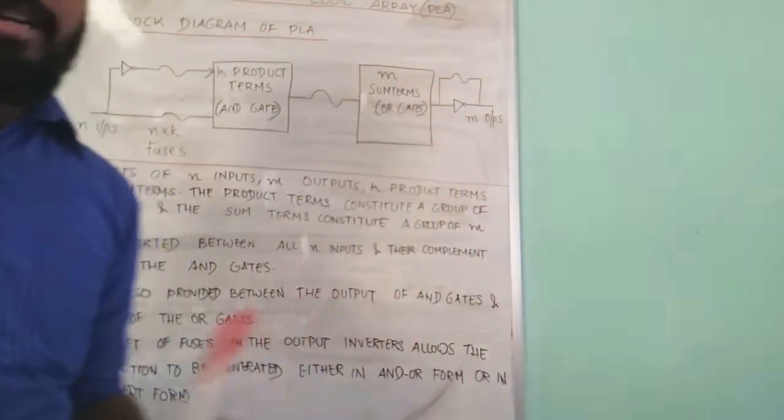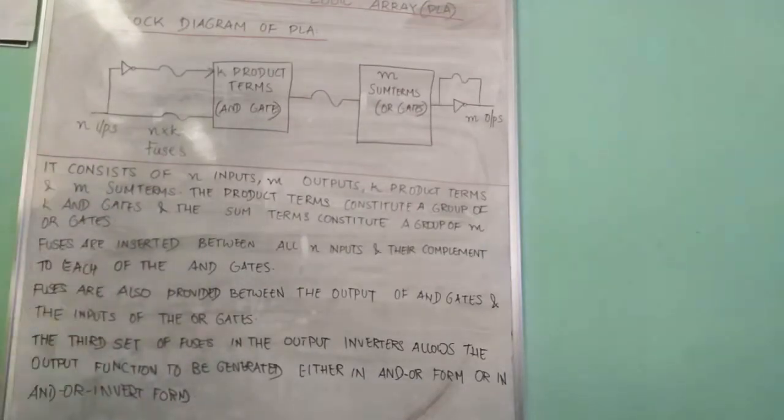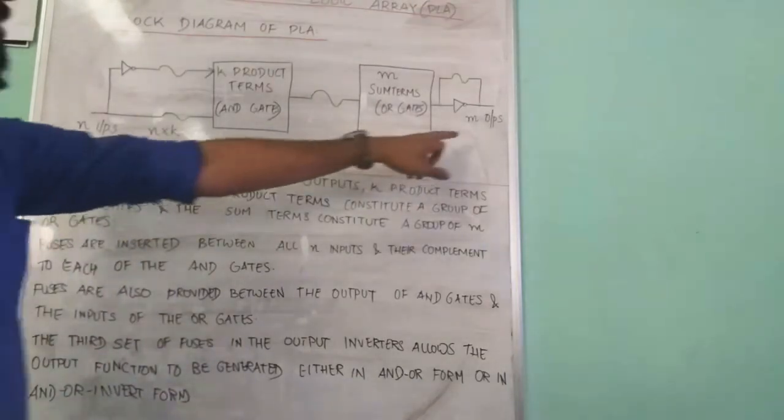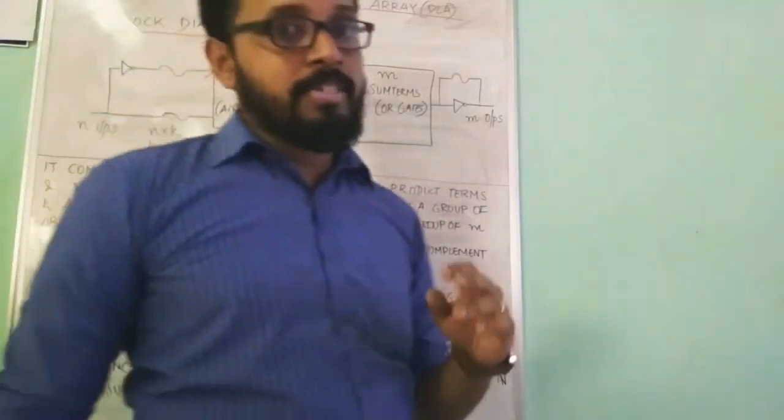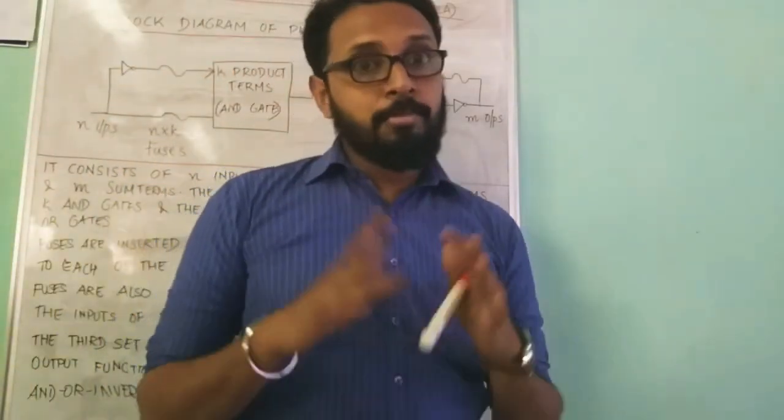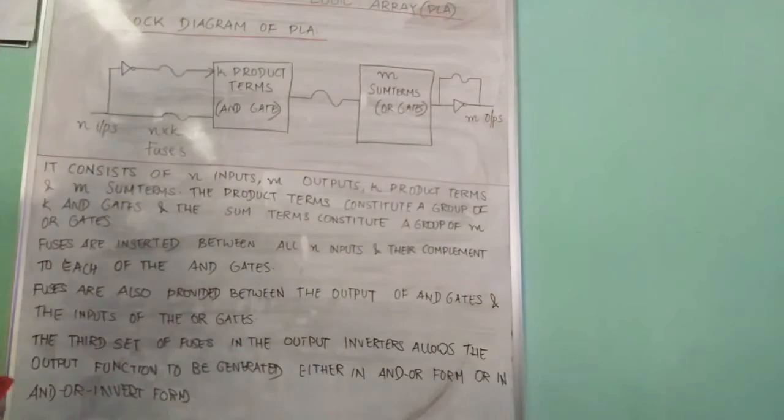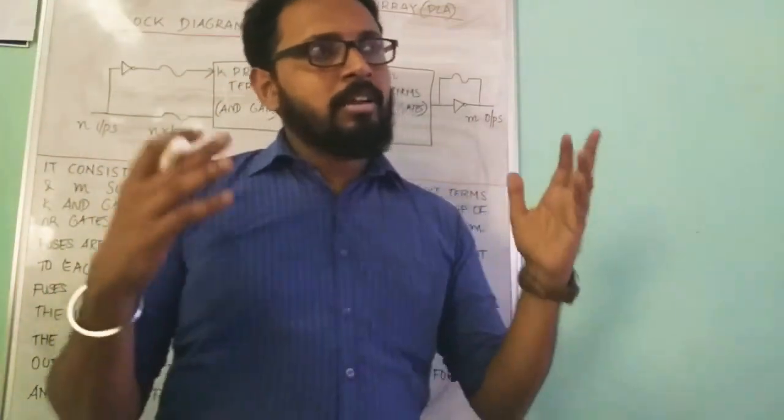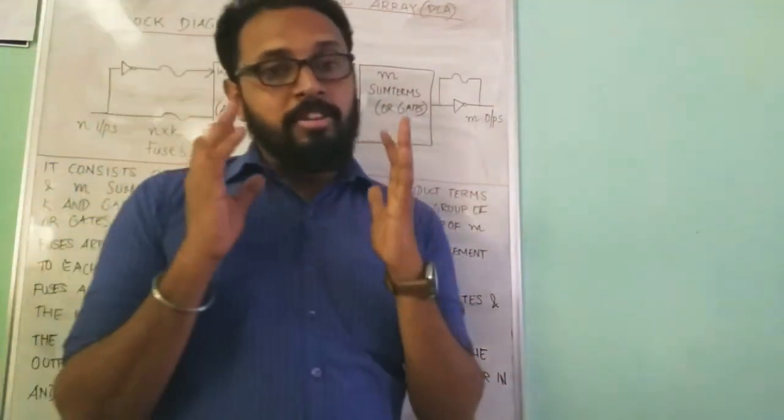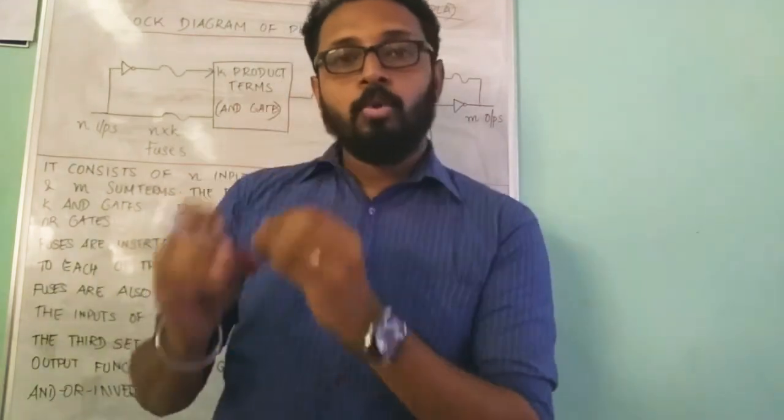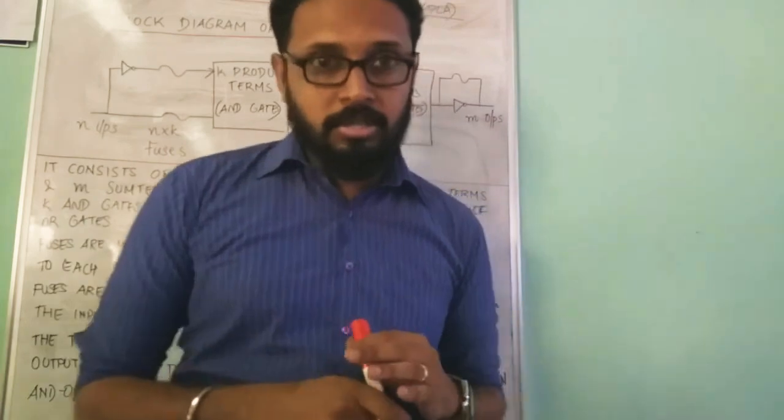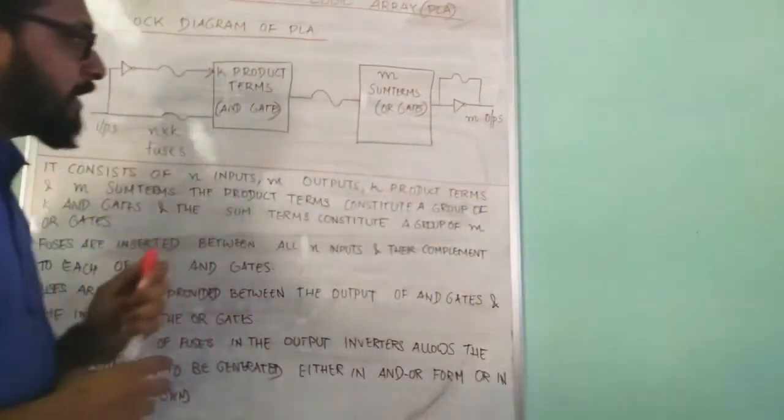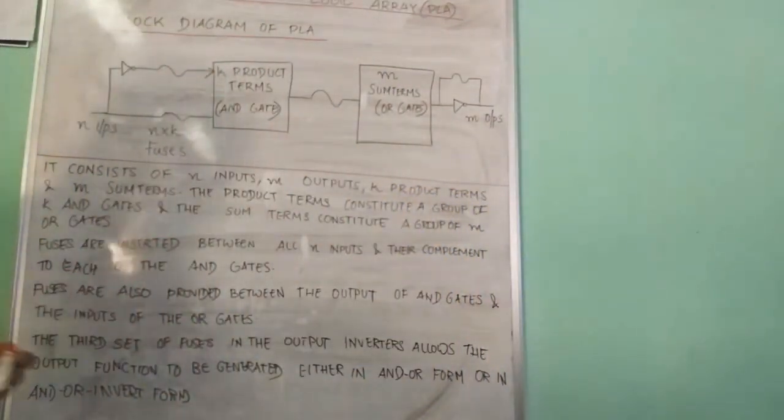This is the block diagram of PLA. Here we have a set of inputs and outputs. As we have told earlier, it consists of a set of AND gates and OR gates which are programmable. Don't get confused by seeing all these gates, just understand how it works. We mainly focus on how to solve problems or how to construct combination logic circuits based on PLAs.